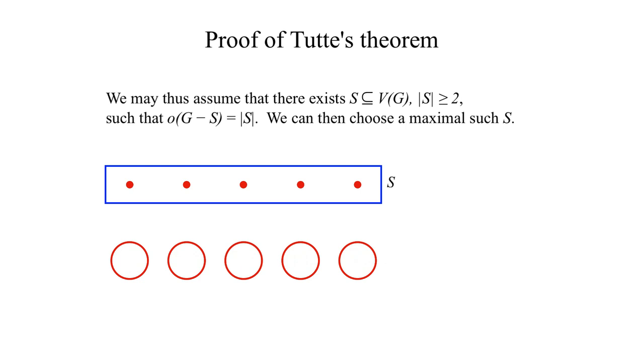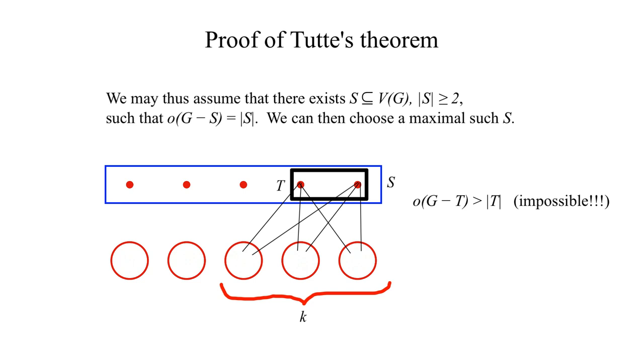This pairing can be accomplished unless there are K odd components which are connected to a subset T of S with less than K elements. But we would then have the number of odd components of G minus T greater than the cardinality of T, which is impossible.